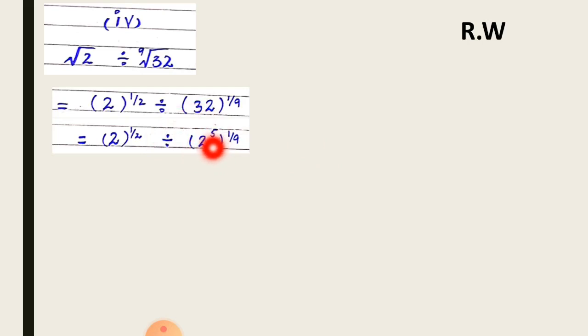Now you have 2 power 5 and 1 by 9. According to the power law, multiply the exponents. So you multiply 5 times 1 by 9 and then you get 5 by 9.